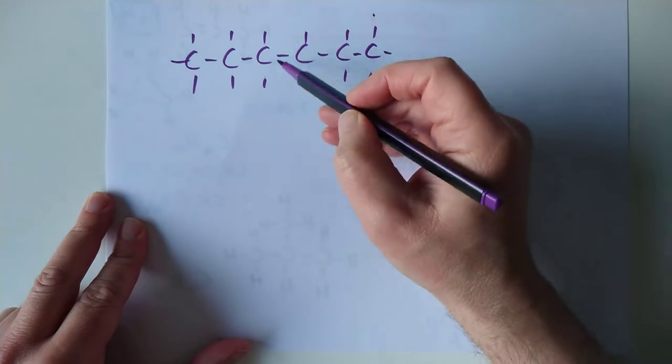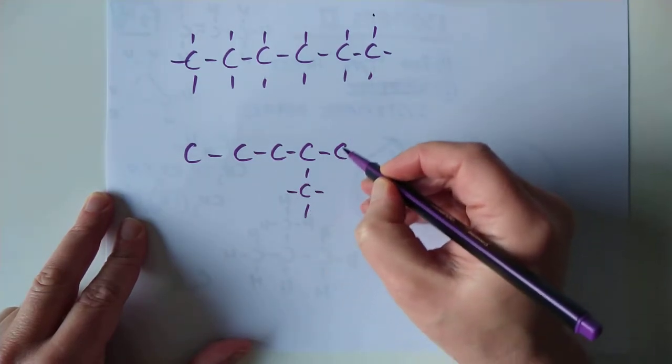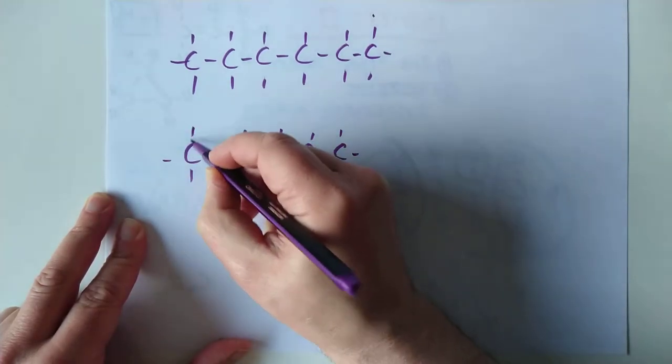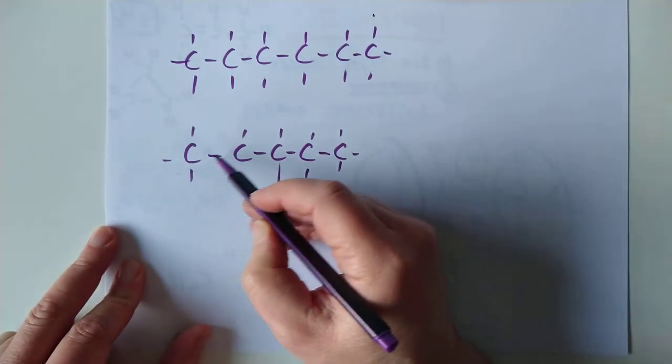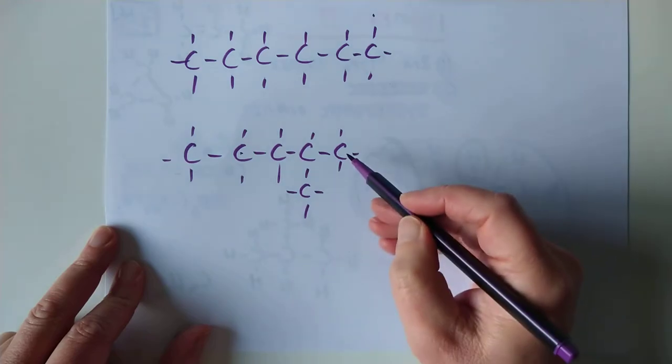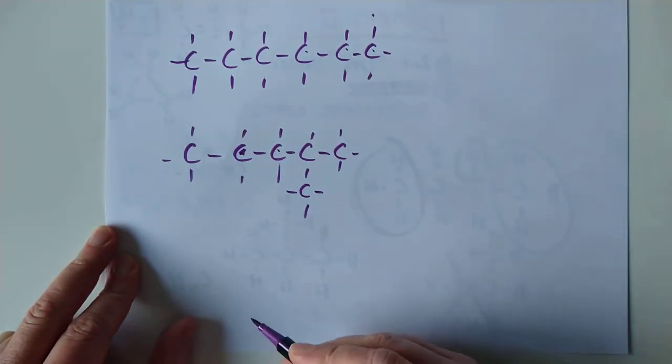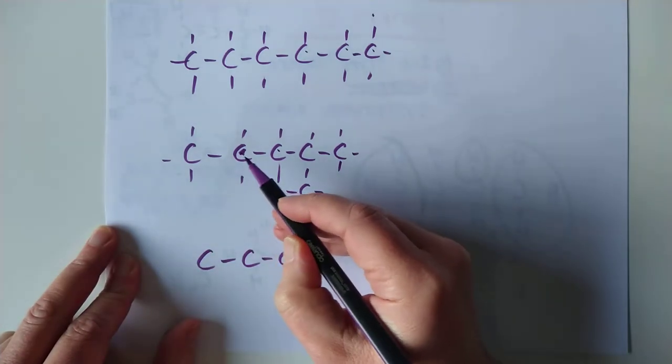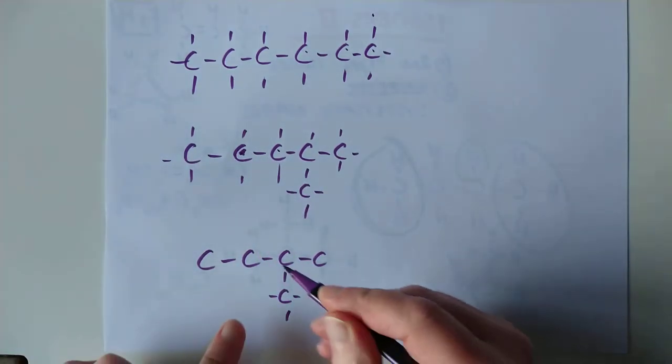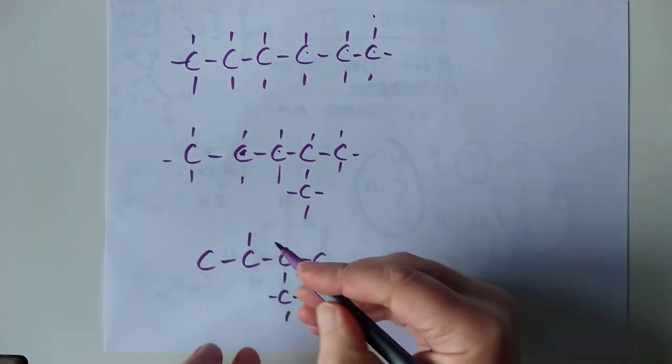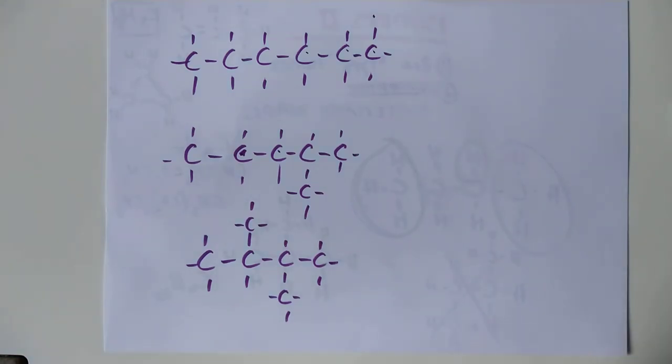The easiest one would be to pluck off one of these and plunk it somewhere in the middle. We're down 1, 2, 3, 4, 5 carbons and we pop that one on there. We could do that again, detaching one and popping it somewhere in the middle. You can't attach it and put it back on this carbon here because that's the same as you started with.